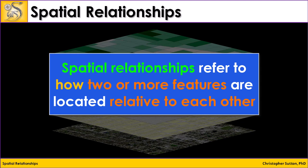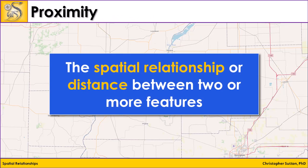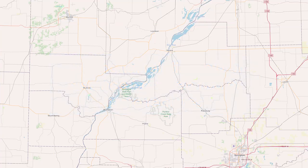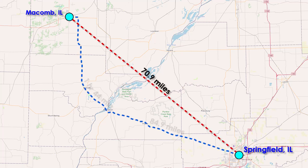I will cover a handful of spatial relationships in this video and will start with proximity. Proximity is the spatial relationship between two or more features, often expressed as distance. On this map, we see Macomb, Illinois and Springfield, Illinois. We can express their proximity in straight line distance, but also in the context of driving time and driving distance.